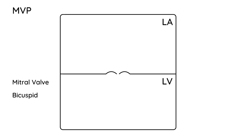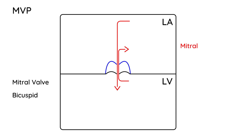Mitral valve prolapse — what does prolapse mean? I'll draw it in blue in an exaggerated way to illustrate. By itself it doesn't seem like a big deal, but the problem is that over time, if serious enough, it can allow mitral regurgitation — blood that normally flows from the left atrium to the left ventricle comes back. That is known as mitral regurgitation.